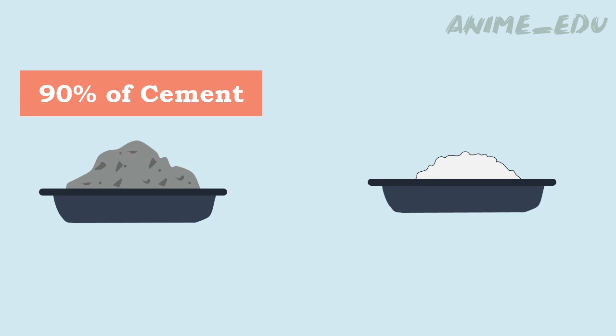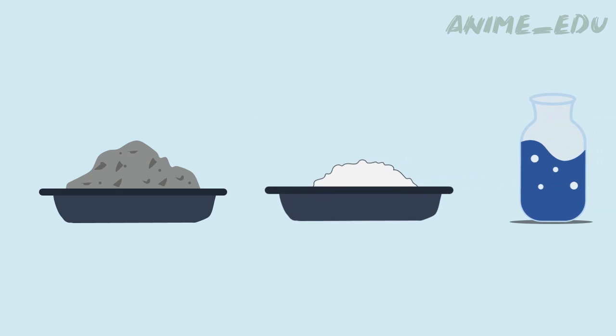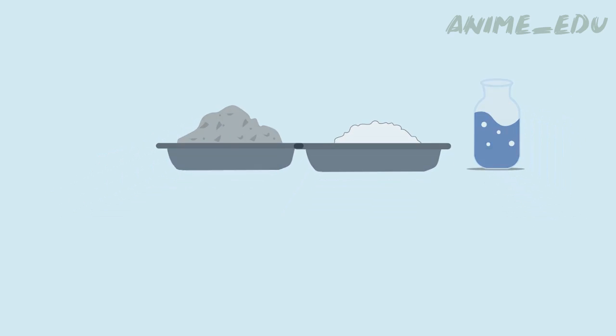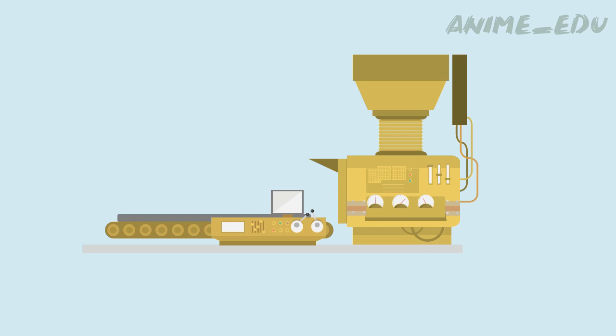Hackwick mixed 90 percent of cement and 10 percent of asbestos fibers with water and made the mixture pass through a cardboard machine, which resulted in strong thin sheets.